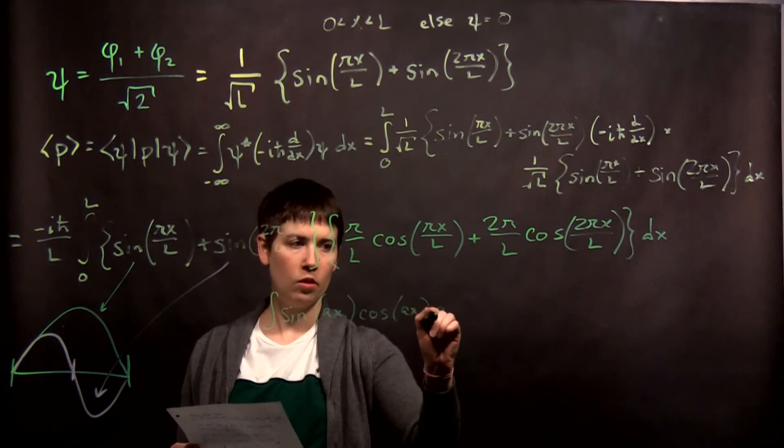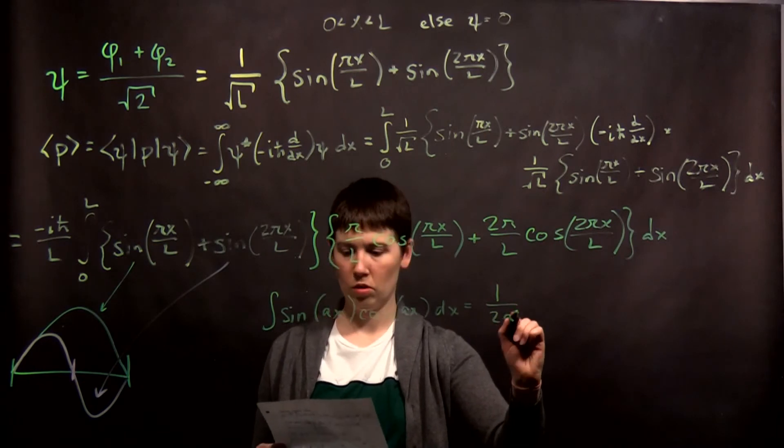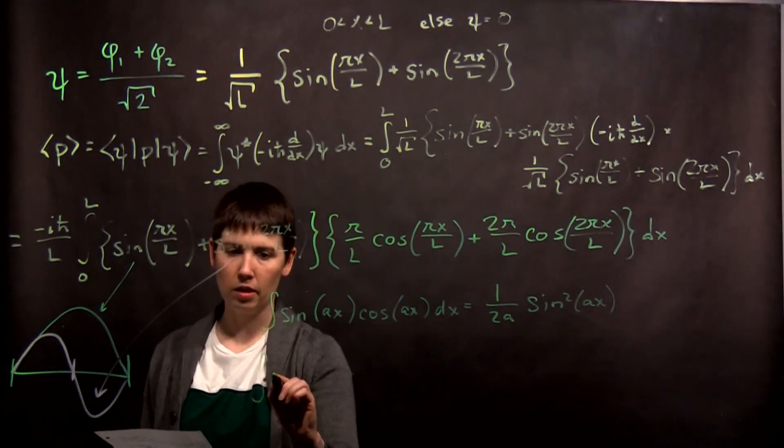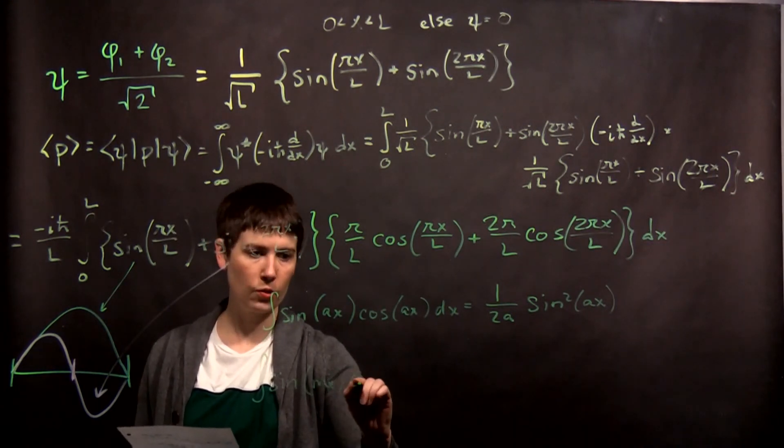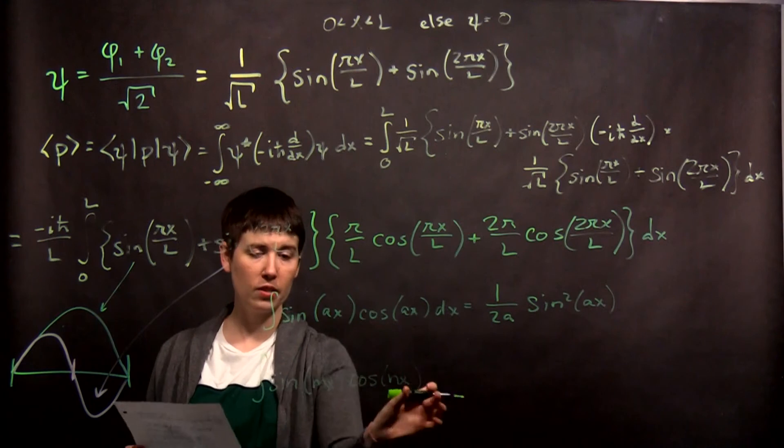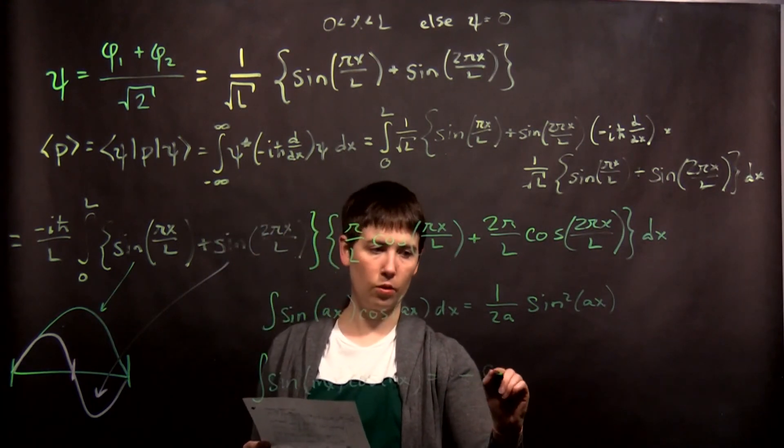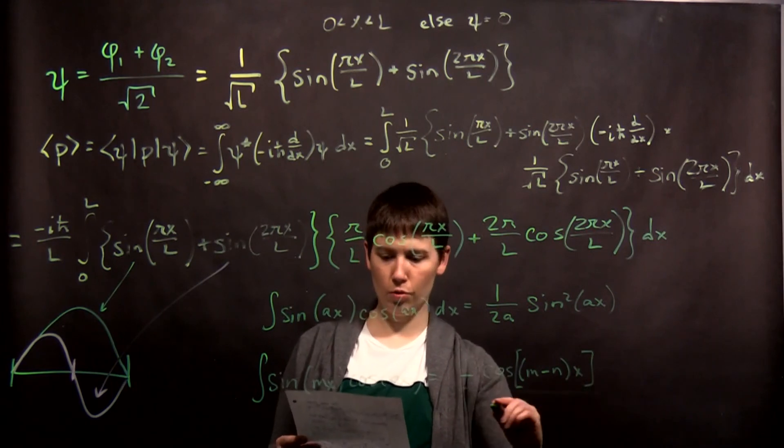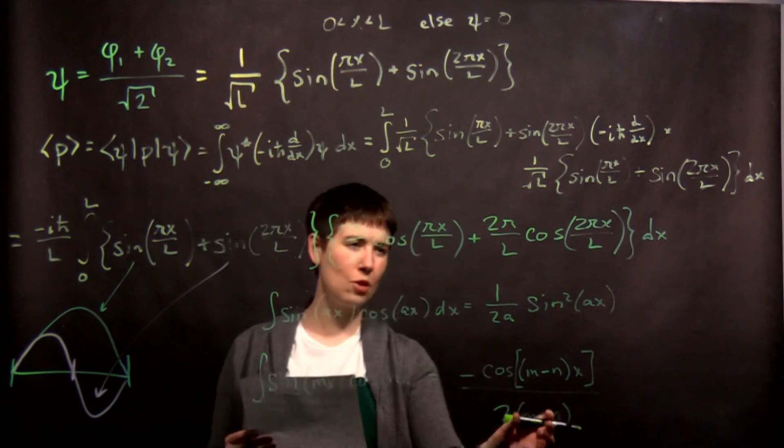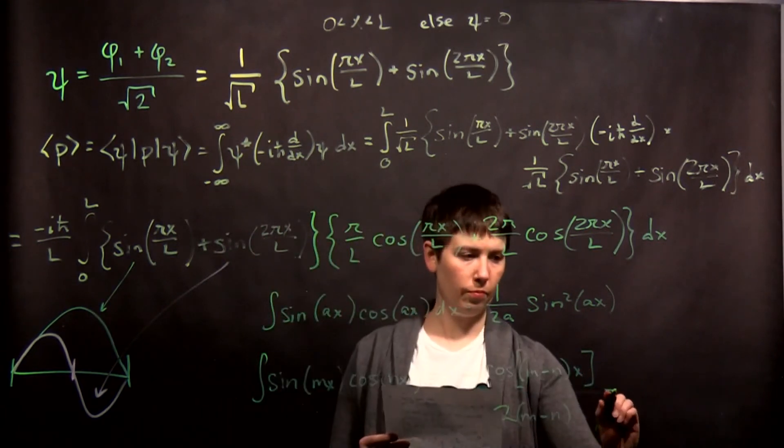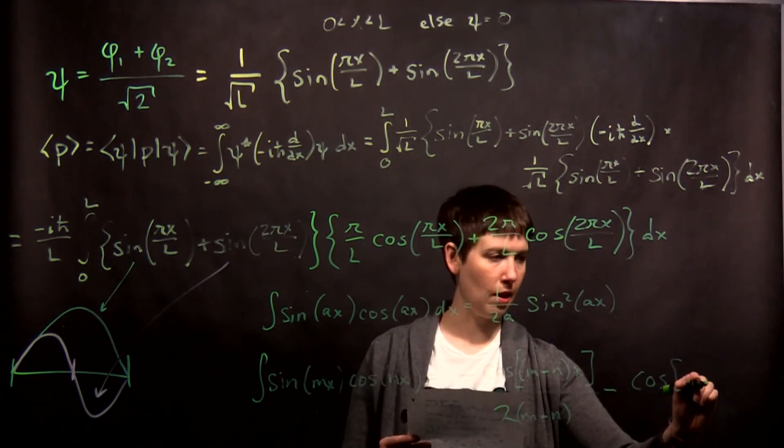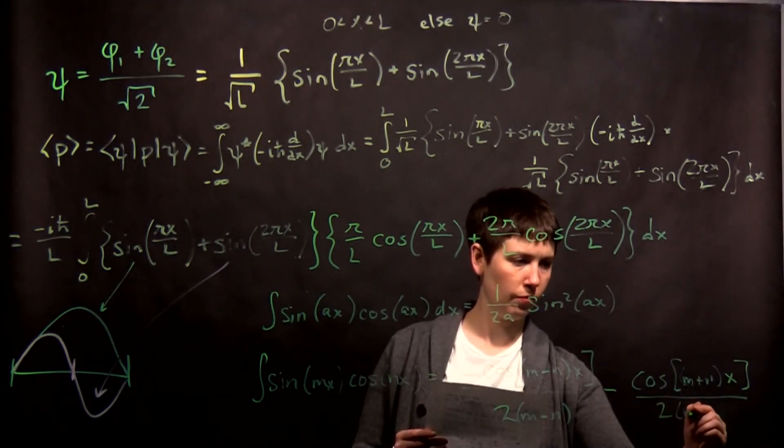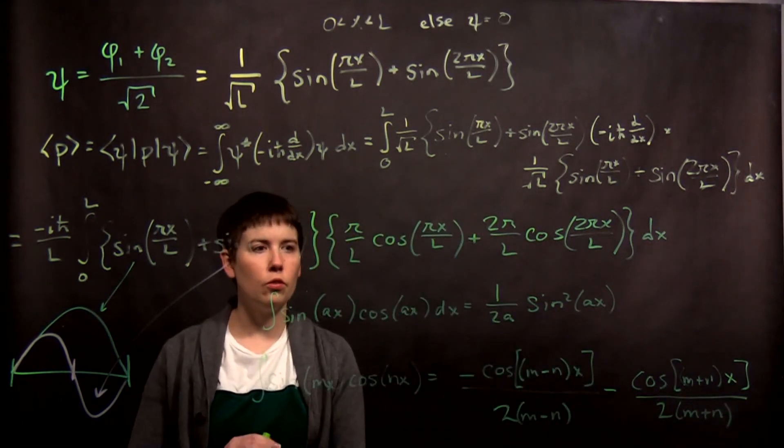So one to know is that sine of ax cosine of ax dx equals 1 over 2a sine squared of ax. So you use this when the arguments are the same. A different one that's more complicated is when you have sine of mx cosine of nx, in this case not the same, equals negative cosine m minus nx all over 2m minus n, minus cosine of m plus nx, all over 2m plus n. So, you would have four terms.